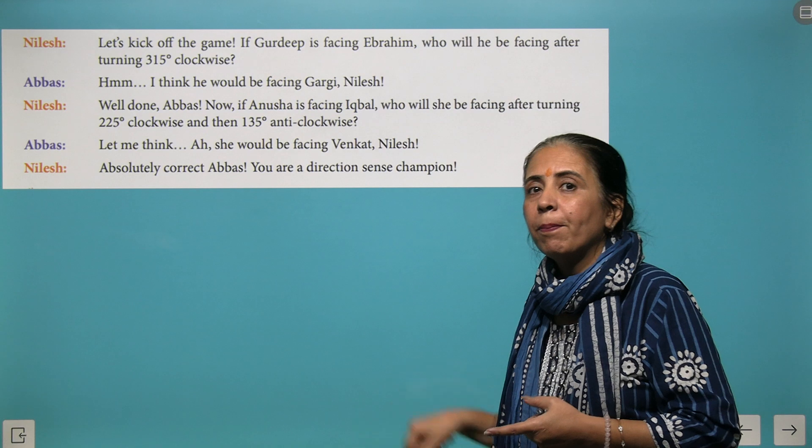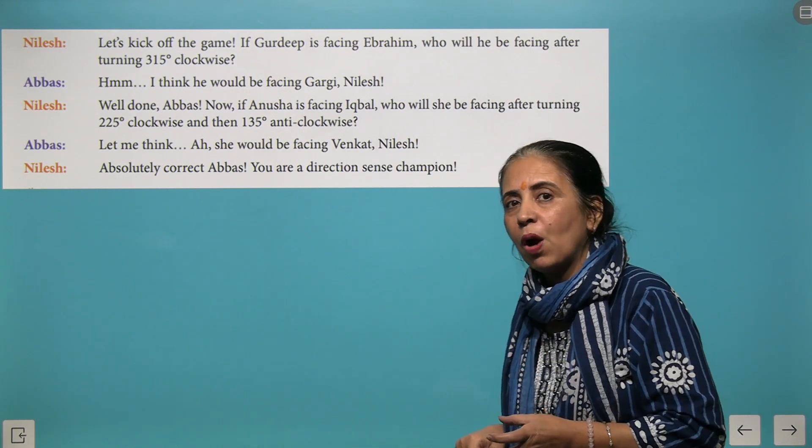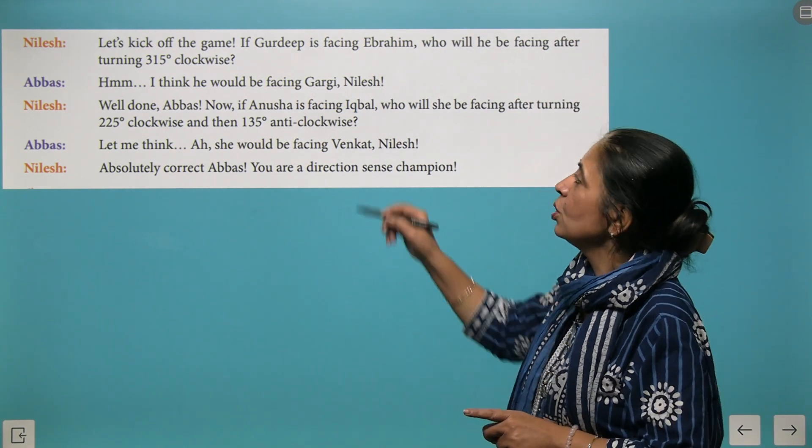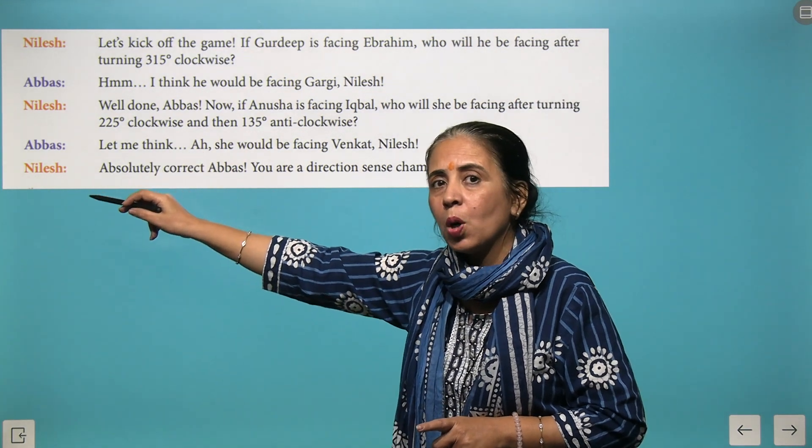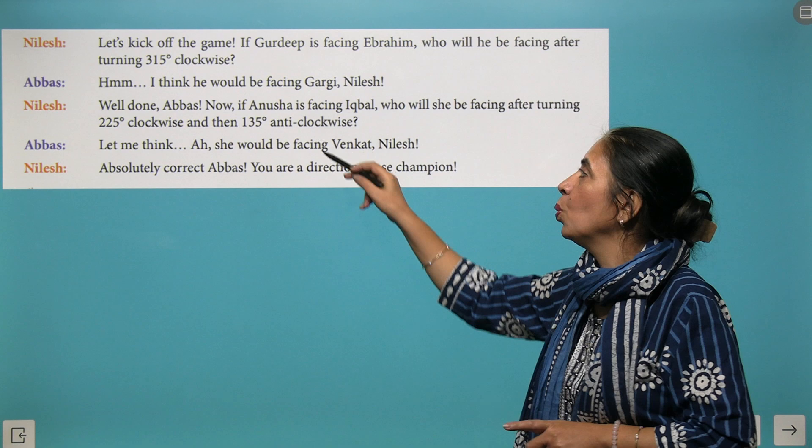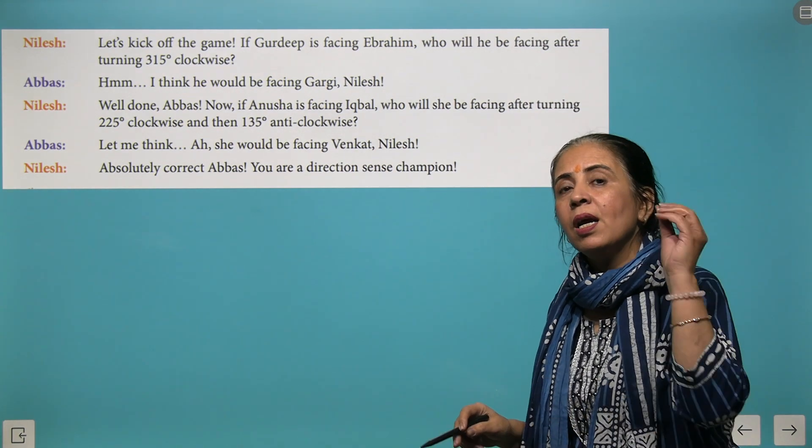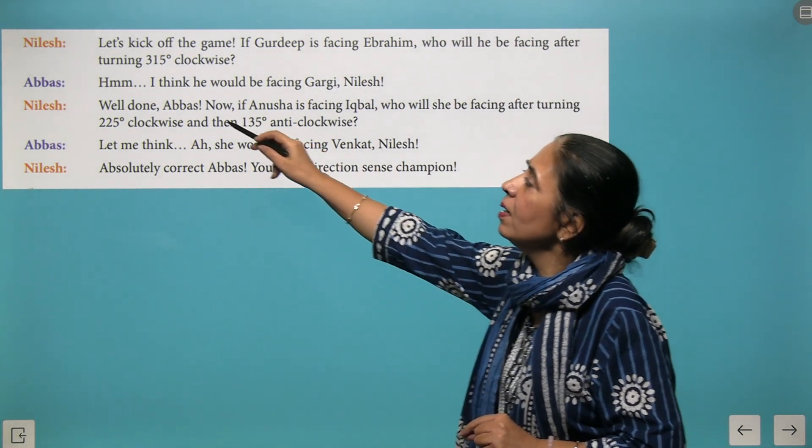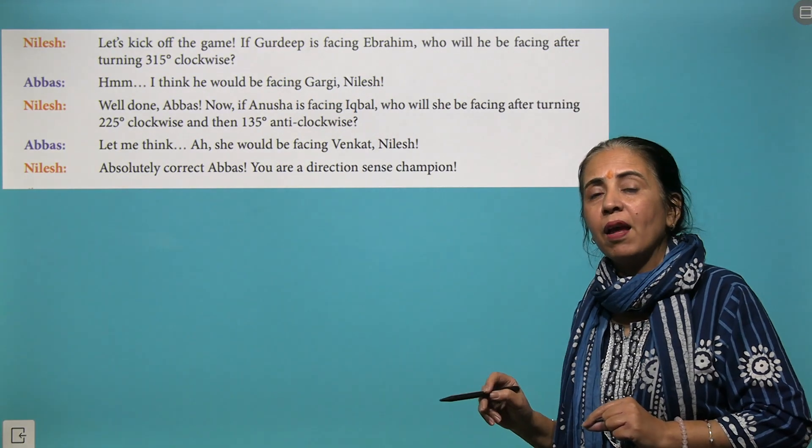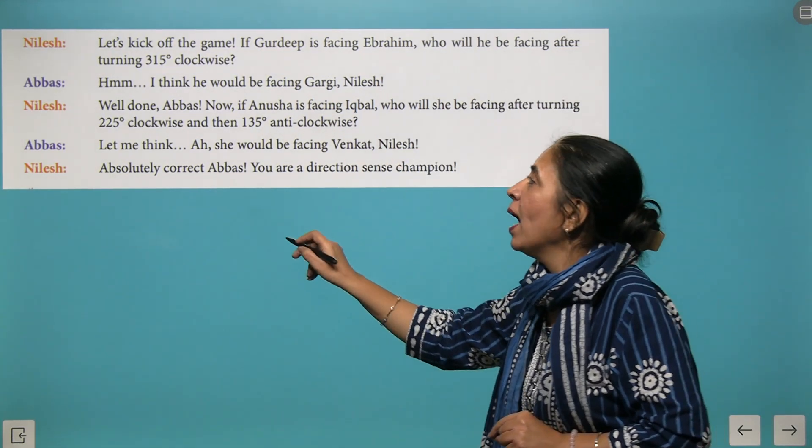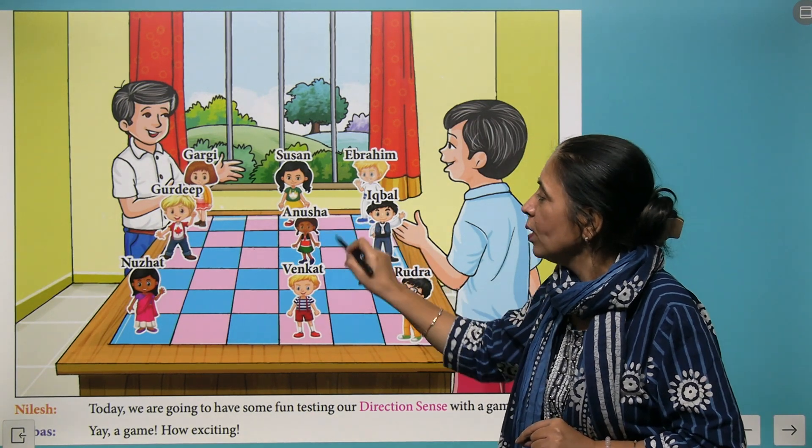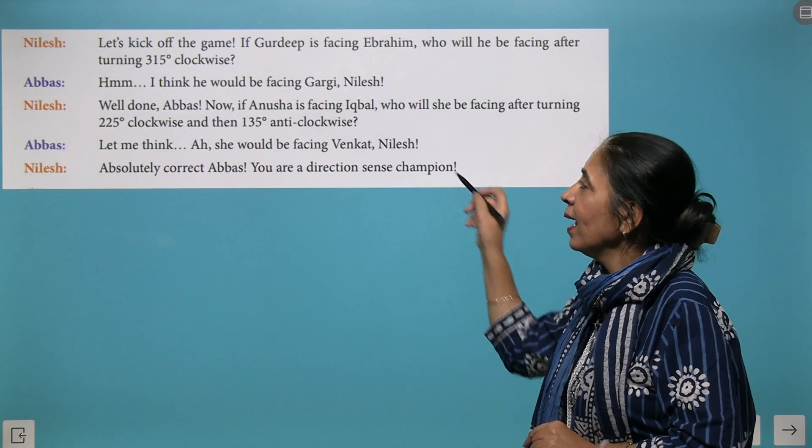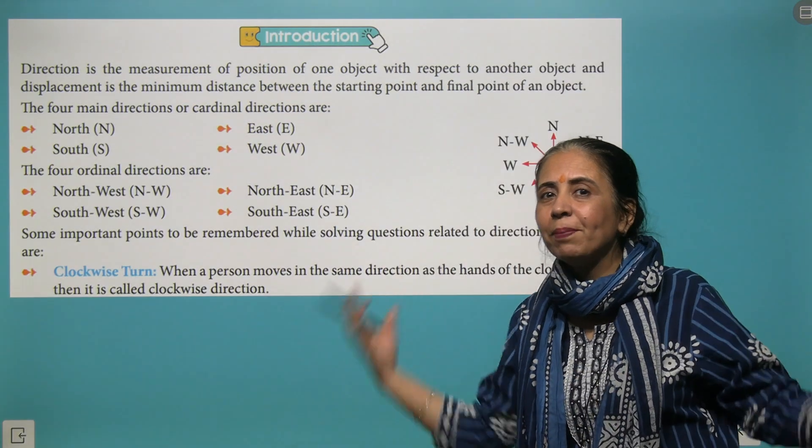When we take a complete turn, that is a complete round of 360 degrees. Turning right at 225 degrees clockwise or turning 135 degrees anti-clockwise, in both cases we reach the same position. If Anusha is facing Iqbal and we give the turn of 225 degrees, the face will be towards Venkat. He gives the right answer and becomes the champion.